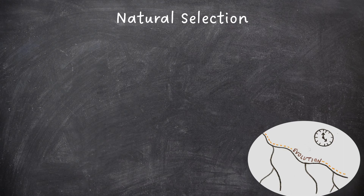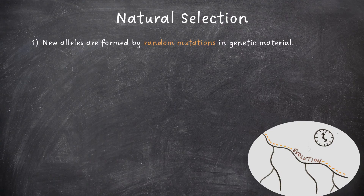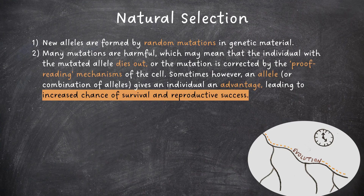Let's move on to natural selection. You should learn how natural selection works and the principles are written out clearly in the specification. The mark schemes that I've seen are more or less word for word the same as those given in the specification, so it's vital to know this off by heart. First, new alleles are formed by random mutations in genetic material. Many mutations are harmful, which may mean that the individual with the mutated allele dies out, or the mutation is corrected by the proofreading mechanisms of the cell.